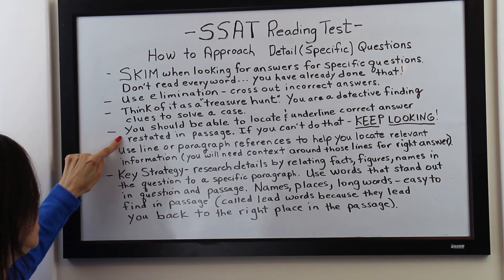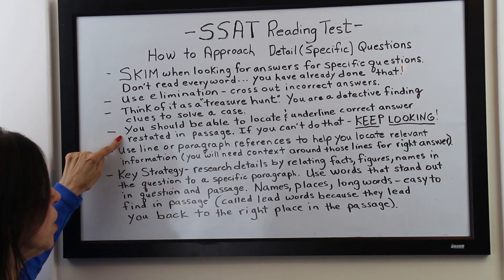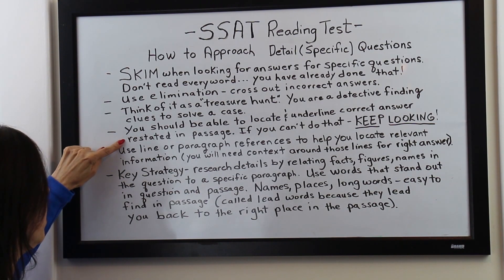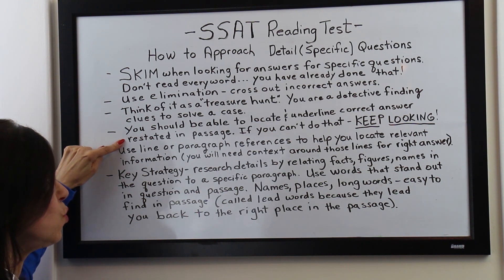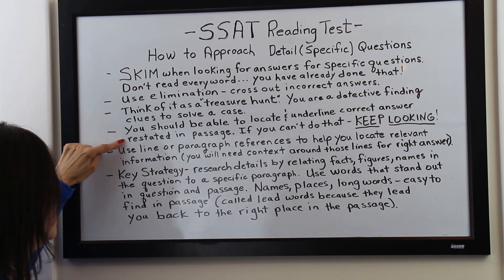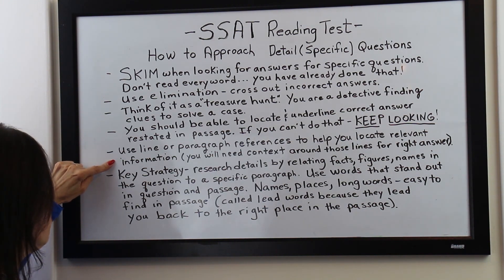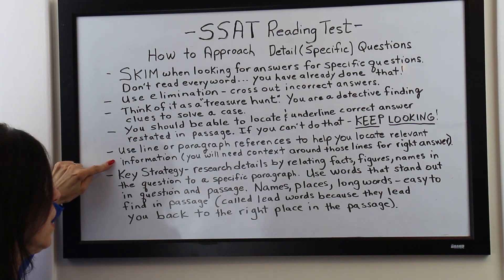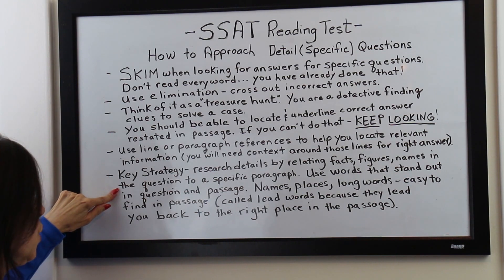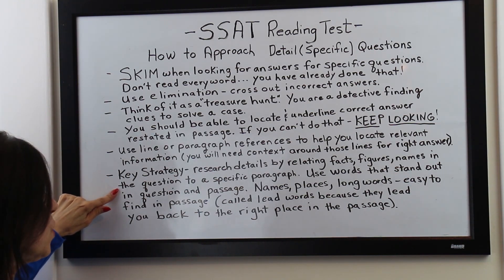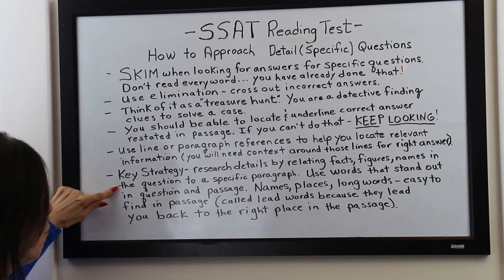This one's really important: you should be able to locate and underline the correct answer restated or paraphrased in the passage. If you can't do that, then you haven't found the answer yet — keep looking. You definitely want to use line or paragraph references to help you locate relevant information. Remember, you'll need the context around those lines for the right answer; you have to read more of the paragraph to get the right answer. A key strategy: research the details by relating facts, figures, and names in the question to a specific paragraph.